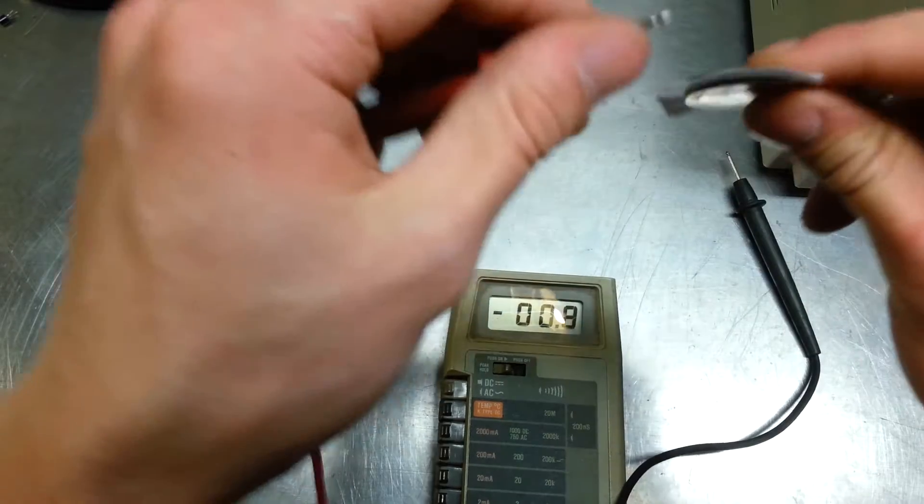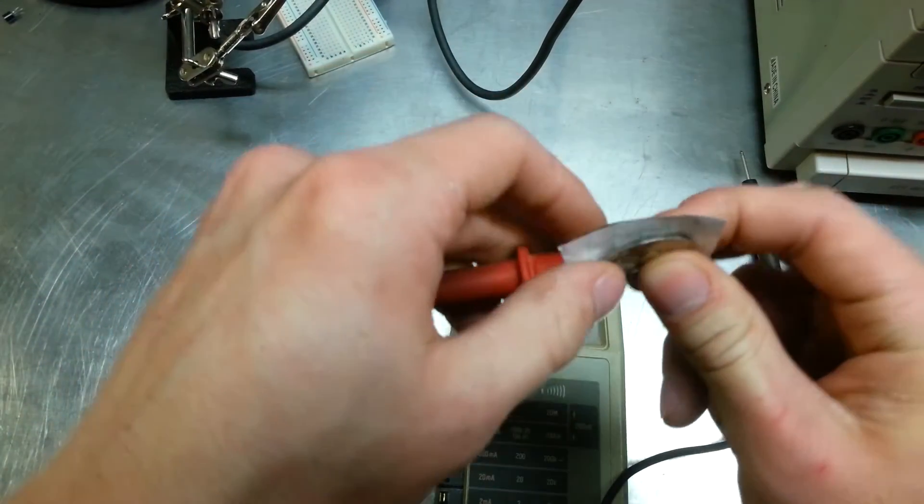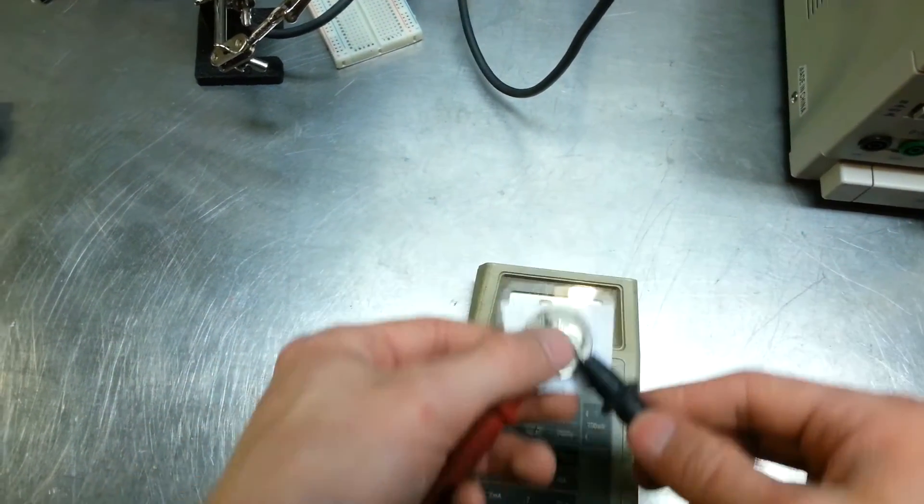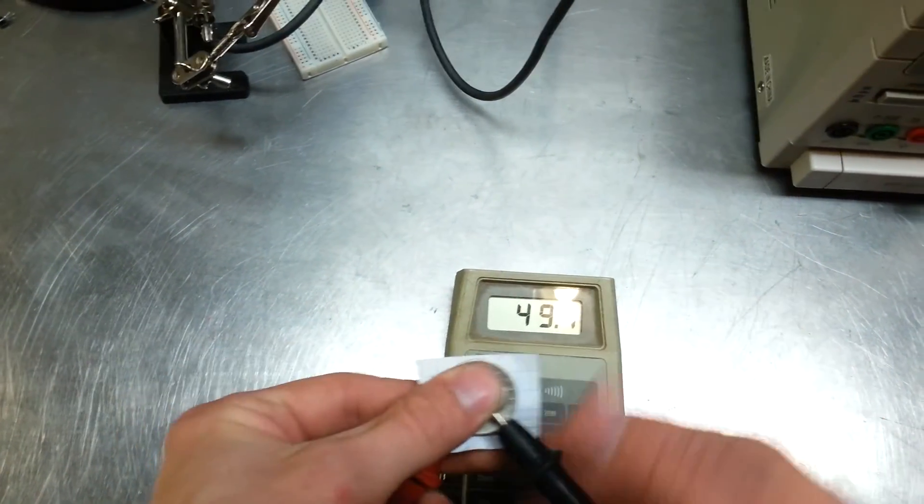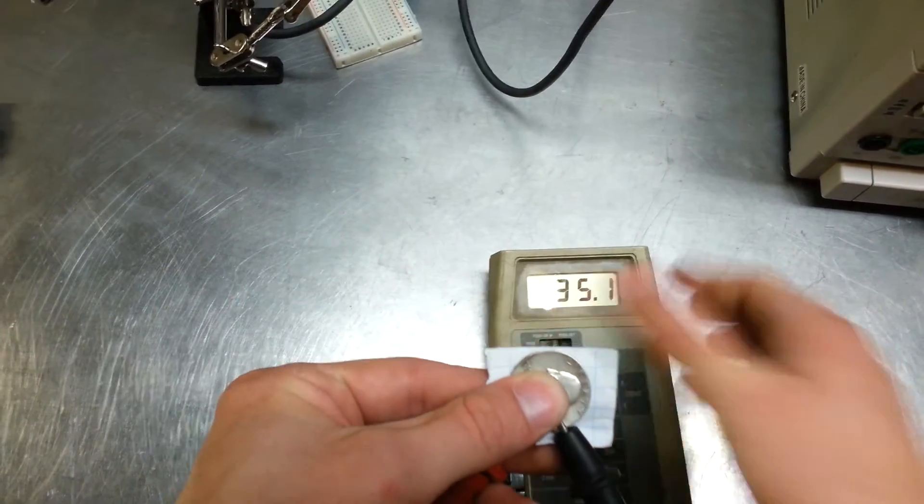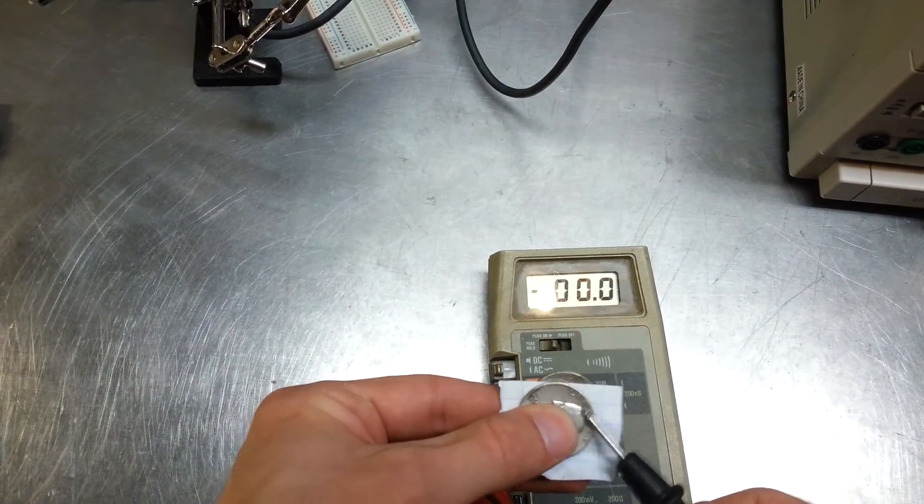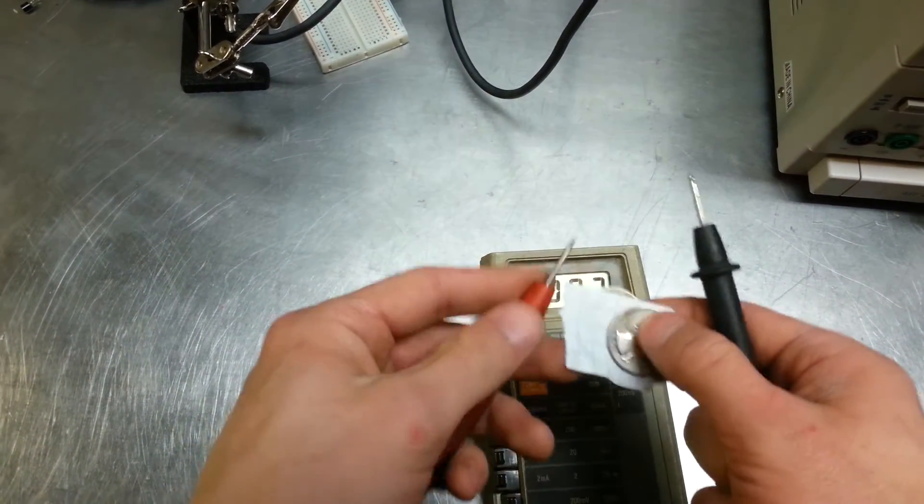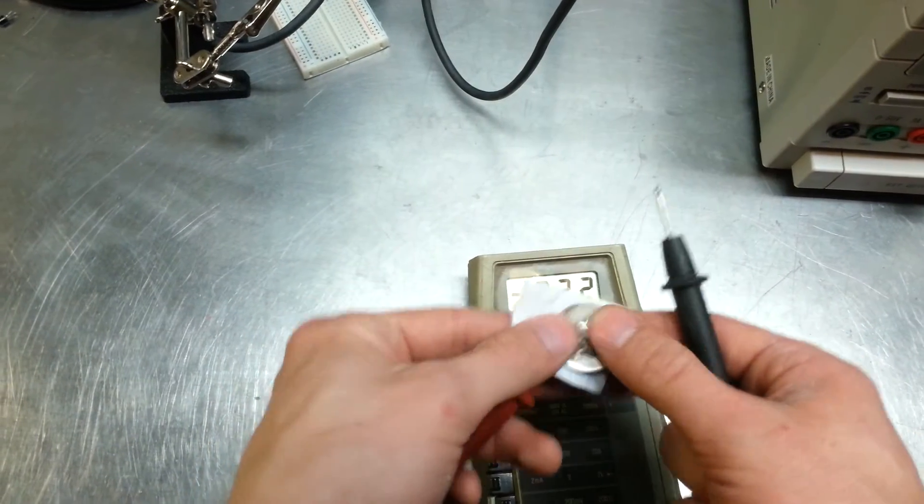Now, if I just take one of these probes and stick it up underneath there, like that, and the other one on top, I get a little bit more voltage out of here, but not a whole lot. It's still not going to be enough to charge your phone, probably, but it's enough to show up on this.